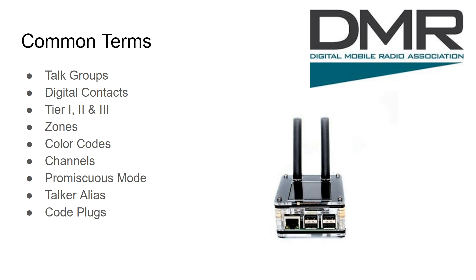Digital contacts are basically your contacts list — people you talk to outside of talk groups. Some radios, like my BTECH DMR-6X2, allow you to enter up to 200,000 digital contacts, which is the entire DMR database. That way, if someone is communicating on a talk group, I can see their call sign, location, and information about them instead of just their DMR ID number, making it much easier to refer to people by name or call sign.